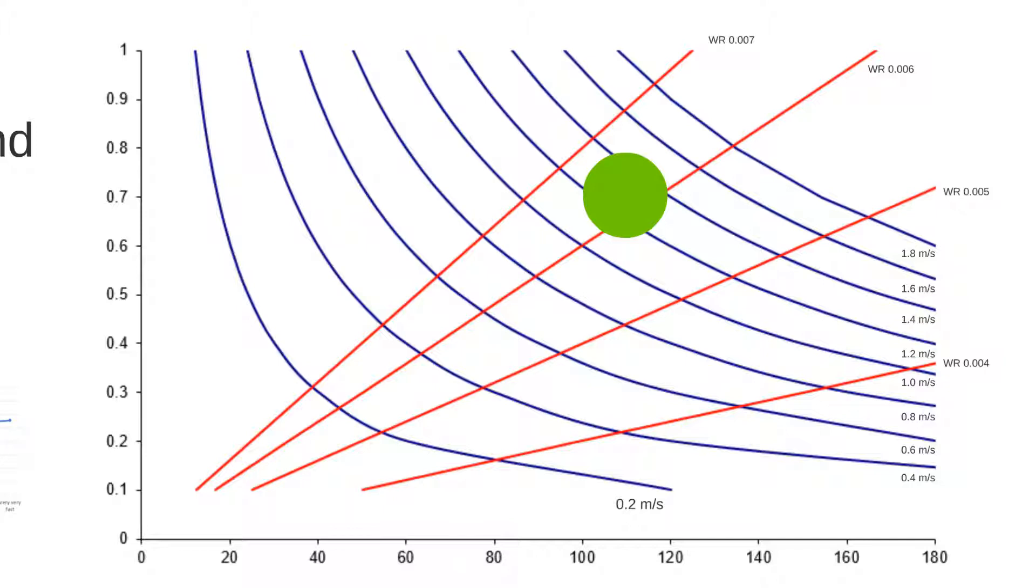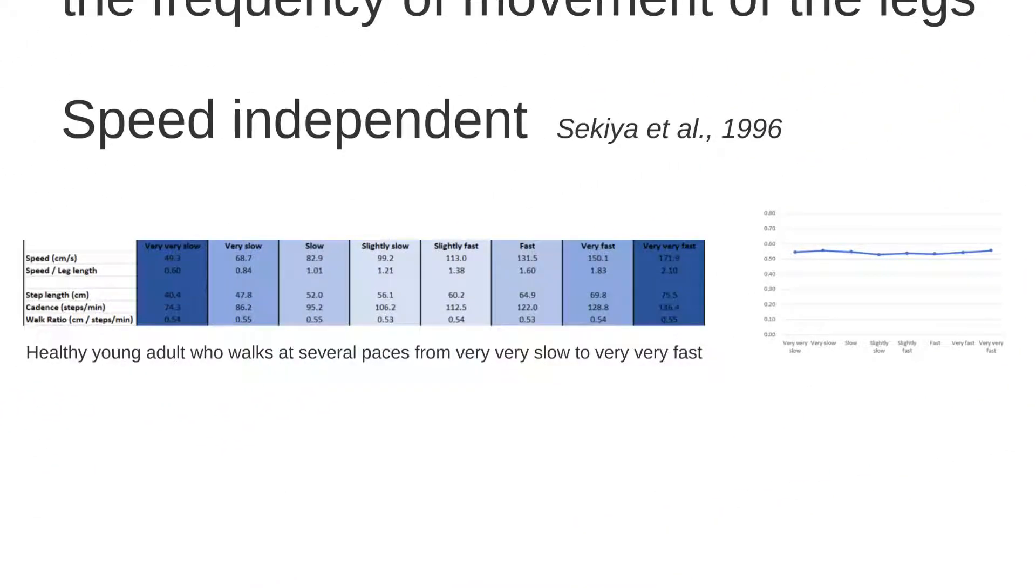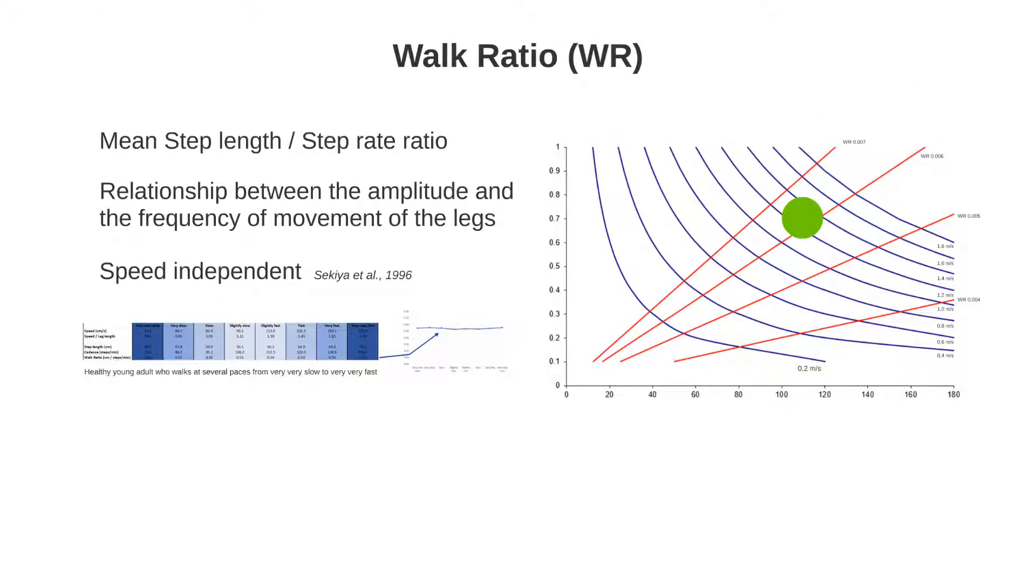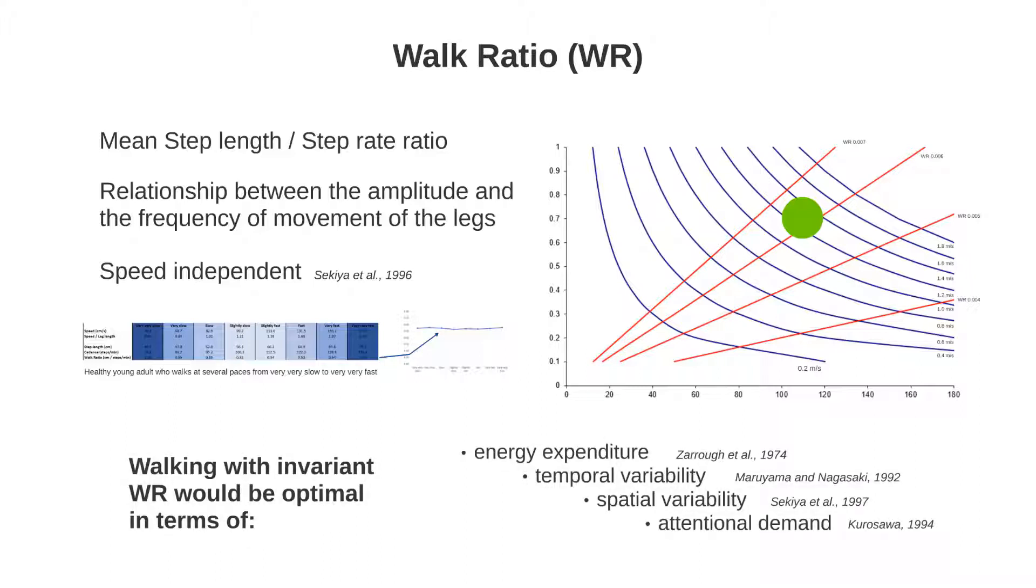Let's take time to check that the walk ratio is actually independent of the speed. One healthy young adult walked at several paces from very, very slow to very, very fast, while the speed increases linearly through the condition. You can see in the graph on the right that the walk ratio ranges between 0.53 and 0.55. This shows the configuration between step length and cadence does not change. Walking with an invariant walk ratio would be optimal in terms of energy expenditure, temporal variability, spatial variability, and attentional demand.